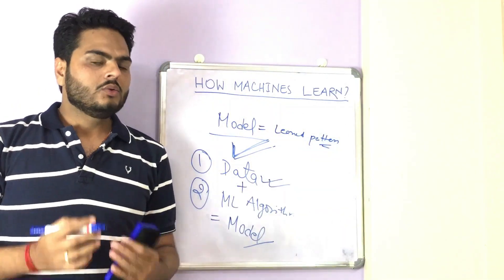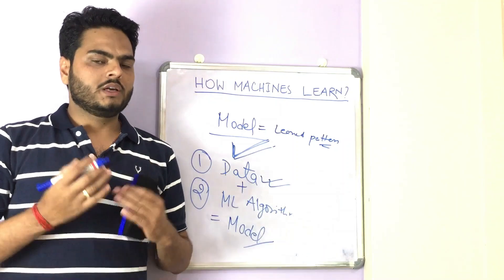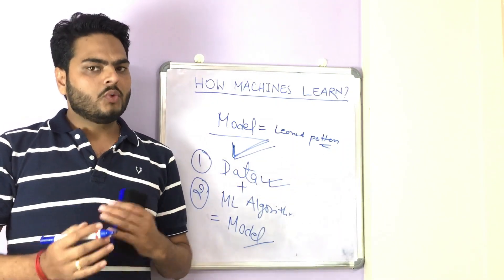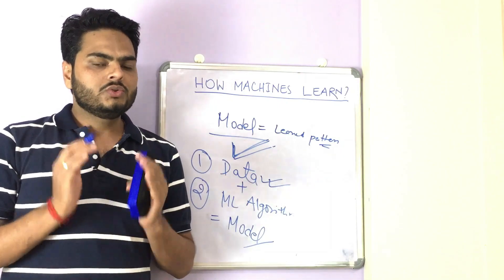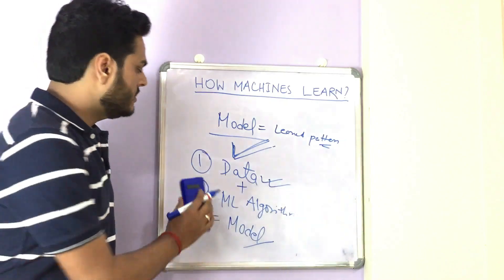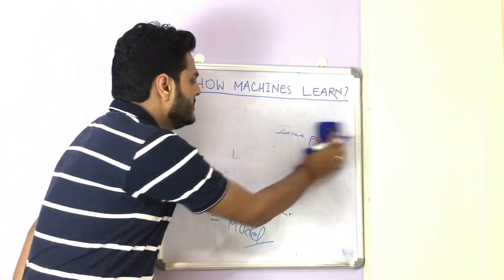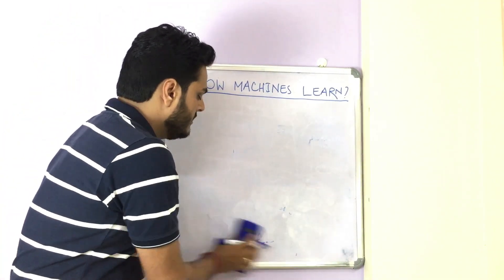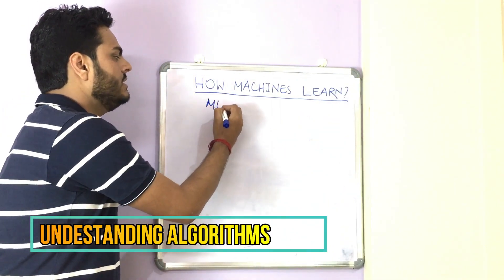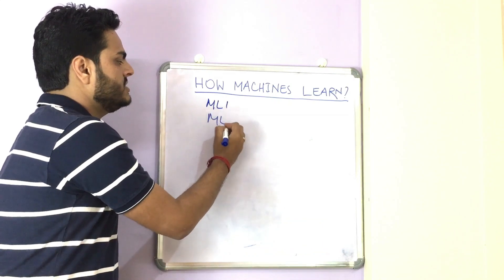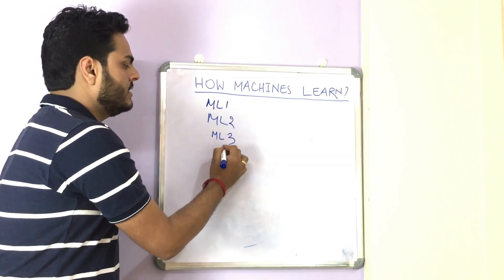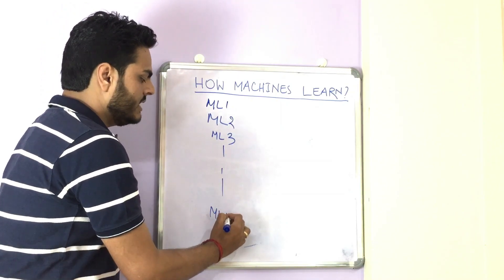What kind of pattern will depend on what machine learning algorithm we are using. Let's see what different machine learning algorithms exist and why it is important to use the right algorithm for the right use case. There are so many machine learning algorithms — ML1, ML2, ML3, and so on up to ML-N.